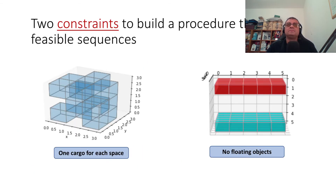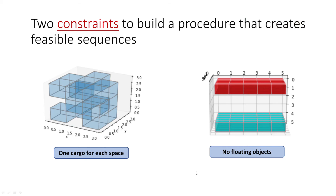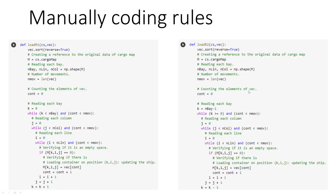To define the constraints for loading or unloading rules, we always have to fulfill two constraints: each cargo occupies just one space at a time, and we don't allow any floating objects — if you are placing containers in a ship, each container should have support below it.